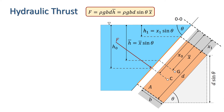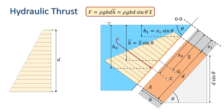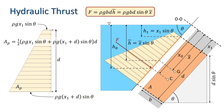Now let's turn our attention to the trapezoidal pressure diagram, which represents the distribution of pressure over A. Let the area of the pressure diagram be AP. The pressure at the top of A is rho G H1, and from the geometry H1 equals X1 sine theta, giving a pressure of rho G X1 sine theta. The pressure at the bottom is rho G (X1 plus D) sine theta. The trapezium has height D, so its area is rho G D times (X1 plus one-half D) sine theta. Since X1 plus one-half D equals X bar, this gives rho G D X bar sine theta, and since X bar sine theta equals H bar, we can see that multiplying the area of the pressure diagram by the width B gives the magnitude of the force.